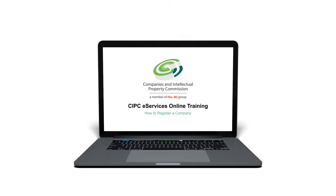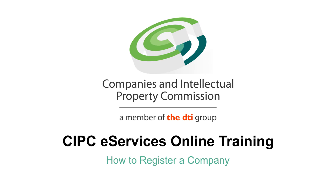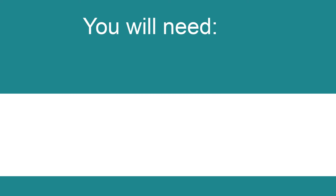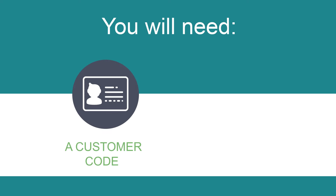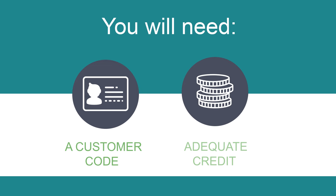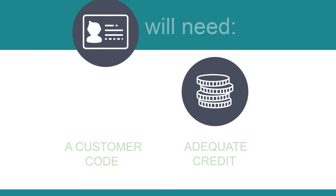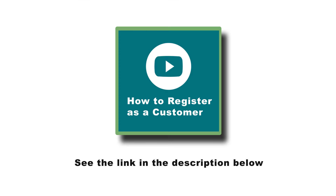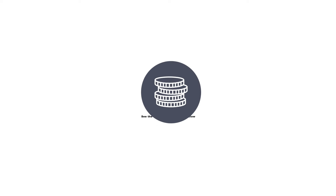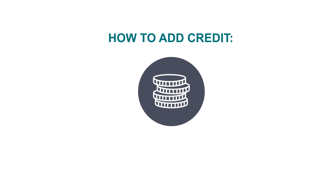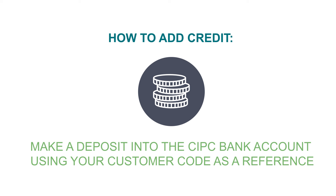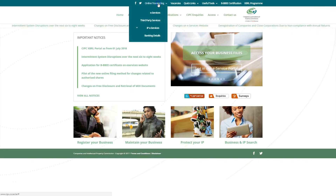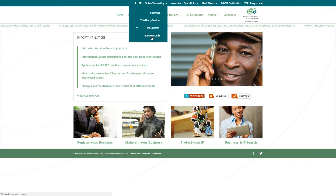To register a private company, you should have registered as a customer and have adequate credit in your customer code. If you have not done so yet, please see the video on how to register as a customer. To add credit to your customer code, you will need to make a deposit into the CIPC bank account using your customer code as reference. The banking details can be found on the CIPC website.